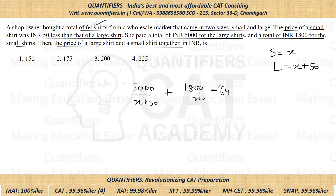Now students, one way of doing it is to solve this quadratic — you will get the answer, but it would be slightly lengthy. The other way is to look at what we are asked: the price of a small shirt and a large shirt together.